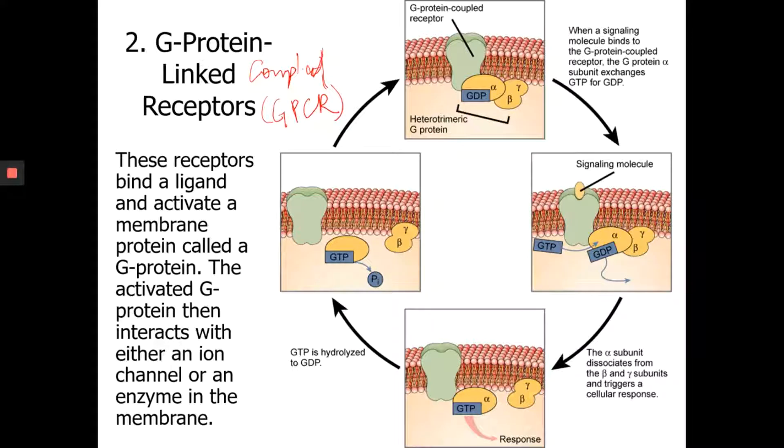So here is how it works. Now you see the cell membrane, the phospholipid bilayer, and then this green big structure is the G-protein-coupled receptor.